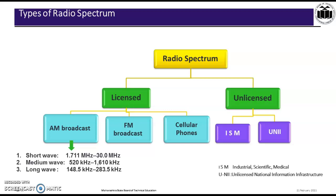Moving to the types of radio spectrum, radio spectrums are classified as licensed and unlicensed. Under licensed, there are three categories: AM broadcast, FM broadcast, and cellular phones. Under unlicensed radio spectrum, there are two groups: ISM, the Industrial Scientific Medical band, and UNII, the Unlicensed National Information Infrastructure.